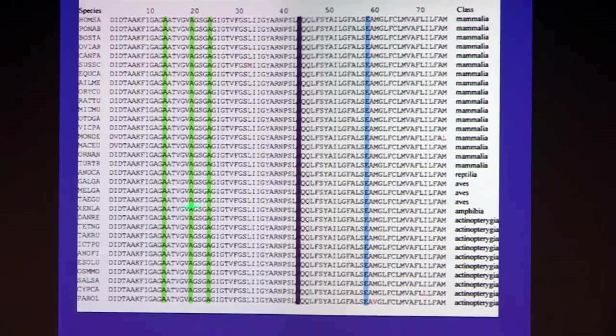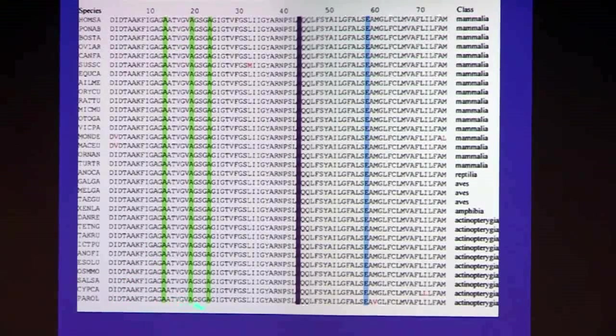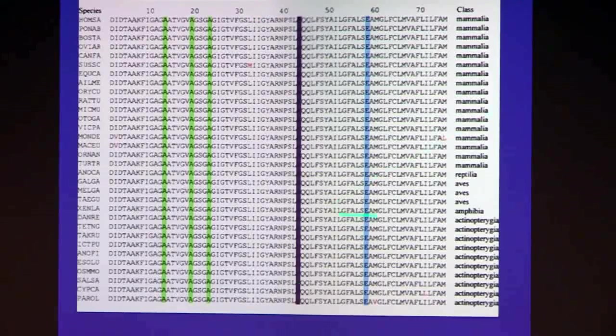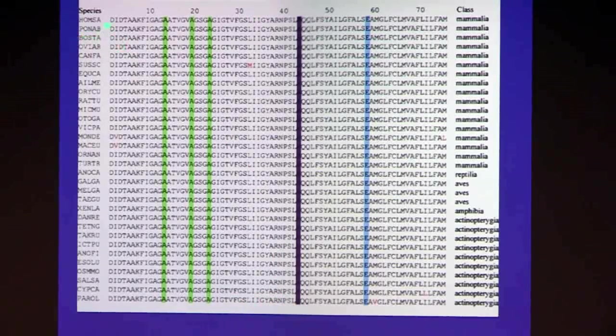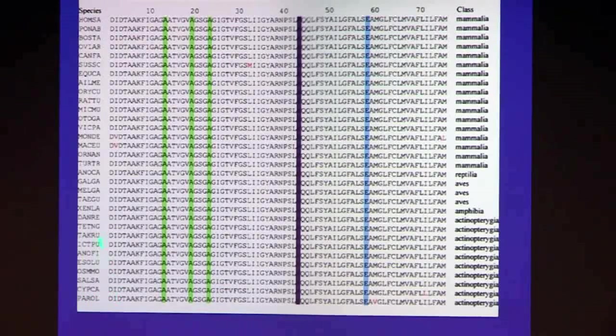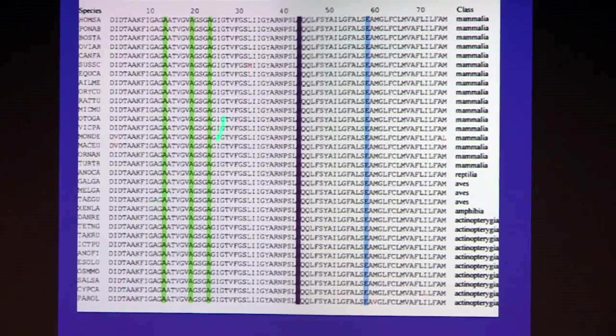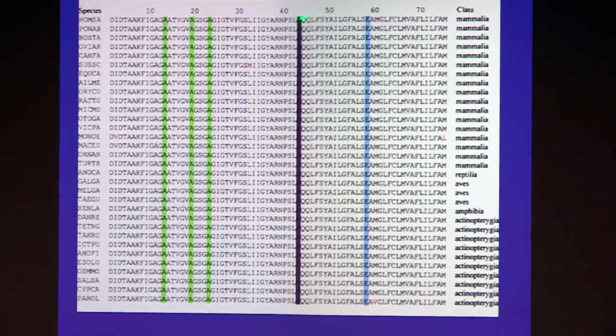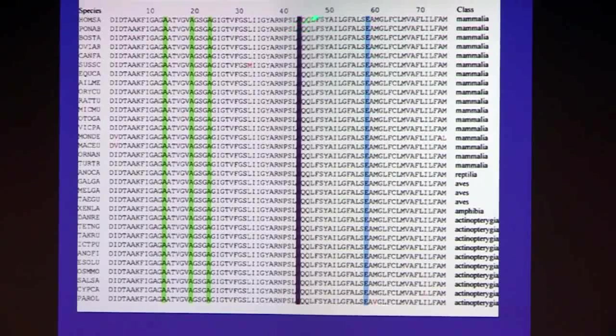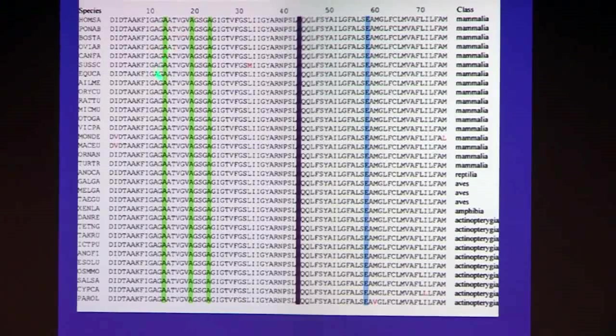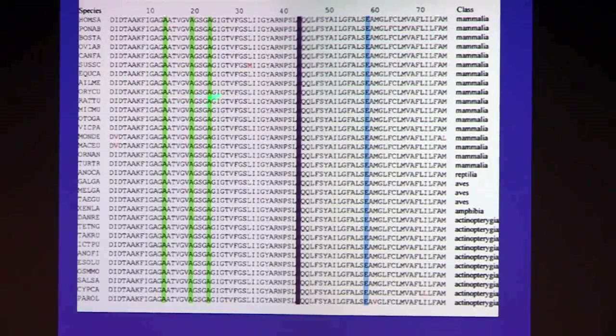But what I then did was to compare sequence, all the vertebrate sequences that I could find for this protein. And to my astonishment they were essentially identical from man all the way down to ray fin fissures. So this is the glutamate, this is the lysine residue which we knew was trimethylated in man and in cows. And I've not mentioned these three residues here, these alanine residues.